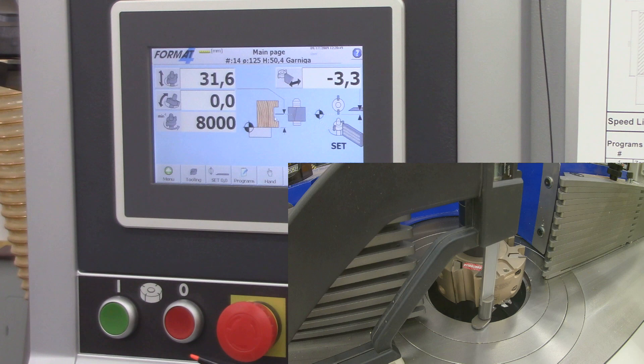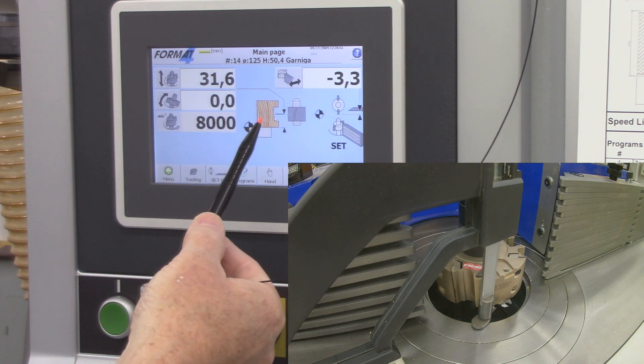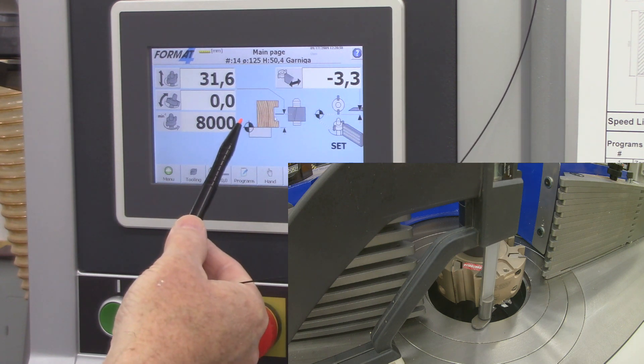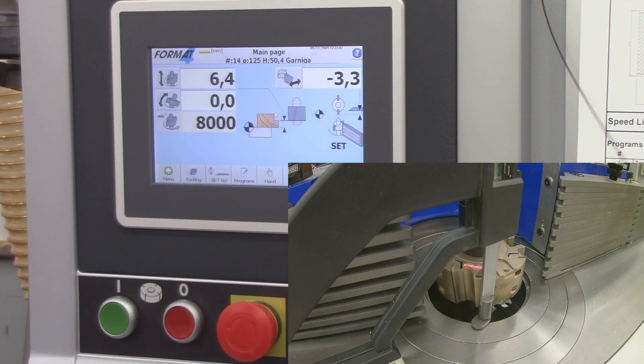But this also enables you to reference to the center of the cutter. Now that's not going to be a whole lot of use here, but for adjustable groovers, that is very nice to actually be able to center that cut right in the middle of a piece of wood. So I'm going to reference the bottom. So now my calibration, once I hit save on that, that is stored for this cutter.